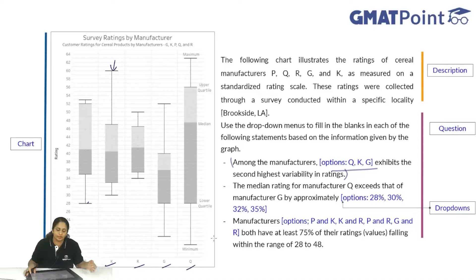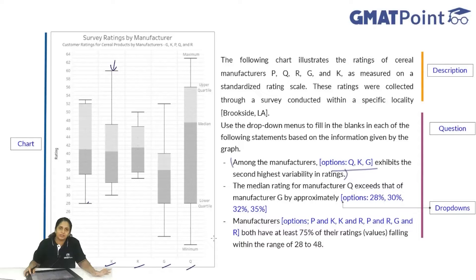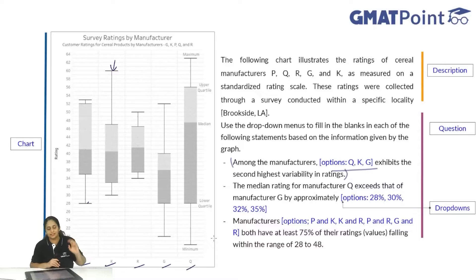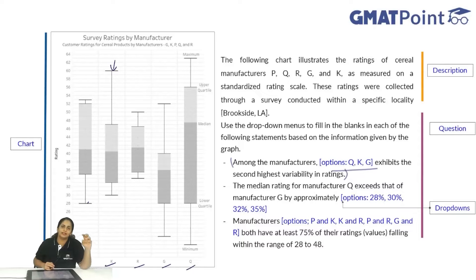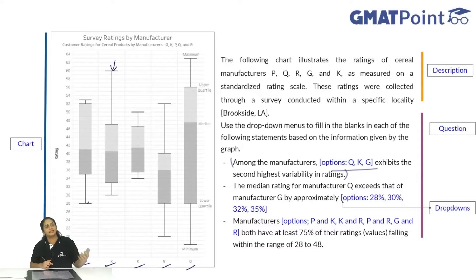We can similarly read all manufacturers P, K, R, G and Q. I can translate the whole thing to a table, or use the information as needed for answering questions. For this graphics interpretation, I suggest there is no need to convert the graph into a table — it is a waste of time. Without converting the graph to a table, let us try to solve this entire set by just reading the necessary information.